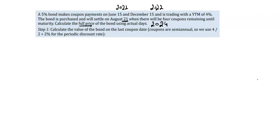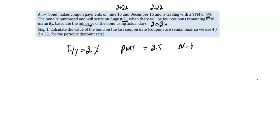Let's calculate the present value of the bond at the last coupon date. This is a semi-annual bond, so I/Y = 2% (half of 4%), PMT = 2.5, N = 4, and FV = 100. Using the calculator, the answer is 101.90. This is the price at the coupon date.